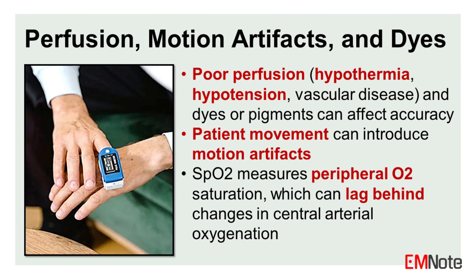Another pitfall is that pulse oximetry measures peripheral oxygen saturation, which can lag behind changes in central arterial oxygenation. This delay may mask acute deterioration in some patients.